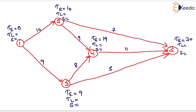If Tl is not given for the last event, it is taken equal to Te, so Tl equals 30 and slack equals 0, since slack equals Tl minus Te. For event 4, Tl equals 30 minus 11 which is 19, and slack equals 0. For event 2, we compare (30 minus 7 = 23) and (19 minus 9 = 10), so we take the minimum value of 10, and slack equals 0. For event 3, we compare (19 minus 8 = 11) and (30 minus 5 = 25), so Tl equals 11 and slack equals 2. For event 1, Tl equals 0 and slack equals 0.